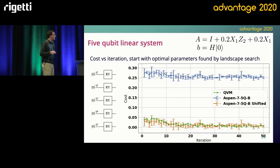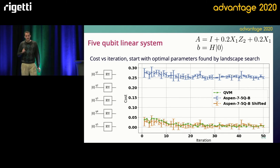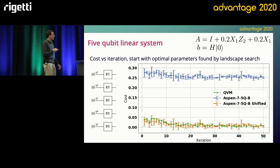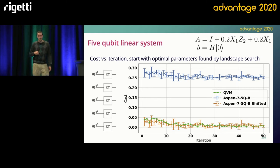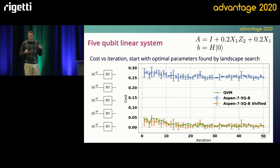The next experiment is doing the same thing and looking at optimizing this. The cost starts out low because we start at a good set of angles found from doing the parameter sweep. This shows trying to minimize it further, and shows a little bit more of the vertical shift seen on the previous graph. I want to emphasize that the shape is the same — if you simply subtract a constant value, just by eyeballing it, you can see that it matches the green curve very well, which is the QVM data. So again, you have this noise shift, but the structure of the landscape is the same, which allows you to do the optimization.